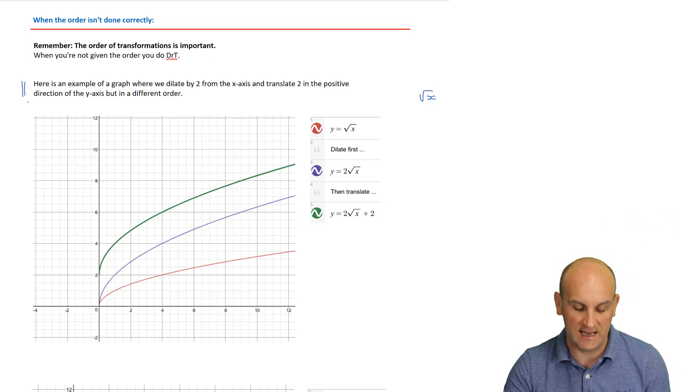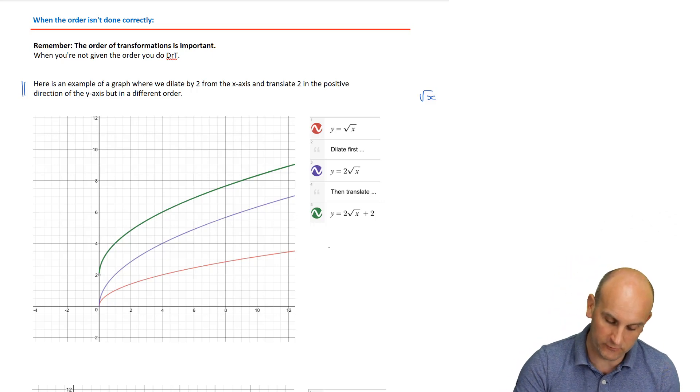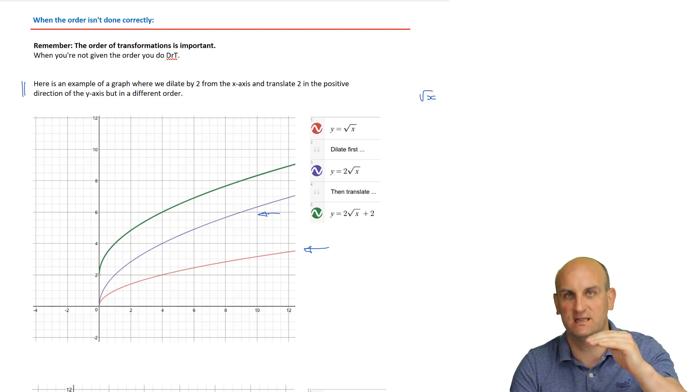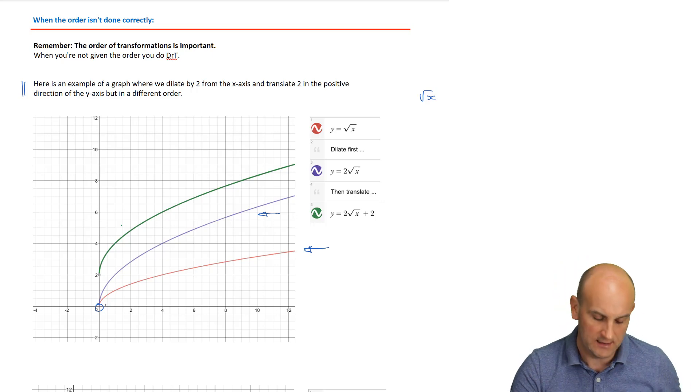So first things first, I'm going to dilate. So my red graph here is my original graph. I've dilated it, which means I've moved it two away from the X axis. That's my purple graph. And then we've translated it and translated it just then moves that whole graph up. And as we can see, the translation, sorry, the dilation kept it at its original point of zero, zero, and then moved the whole graph up by two.